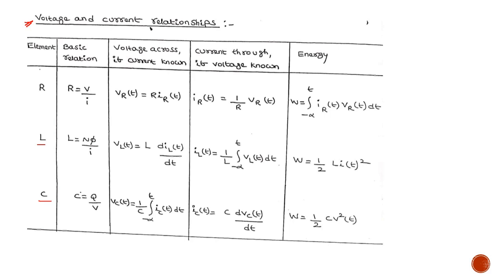For the inductor, which is an electromagnetic device, we are dealing with two sides: the electrical side and the magnetic side. This basic relation tells you the relationship between the electrical and magnetic sides, with the inductor acting as the bridge. Similarly, the capacitor is an electrostatic device, so capacitance C acts as the bridge between the electrical side and the electrostatic side.